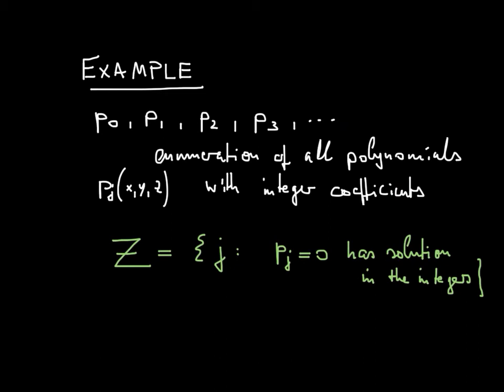So here's an important example of a semi-decidable set. So suppose we have an enumeration of all polynomials in three variables Pj of x, y, z, so they're with integer coefficients. So it's not hard to see that there are only countably many such polynomials. And we assume we have some enumeration of those polynomials. It's not hard to come up with something like that. And then we put Z to be the set of all j such that the jth polynomial Pj has a solution. So if we set it to zero, this equation has a solution in the integers.